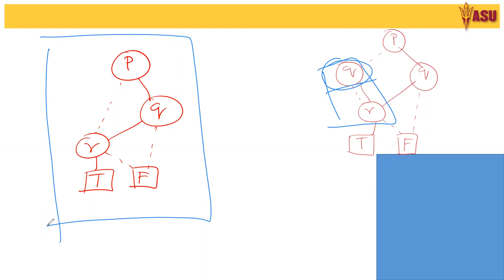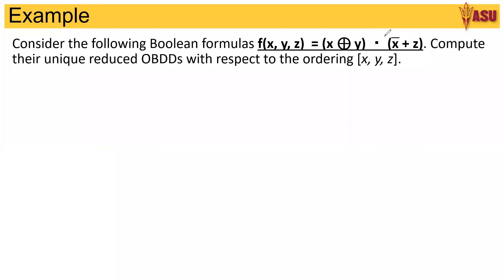Let's see another example starting with a formula. How would I like to go about doing it? So here is a boolean formula. x xor y, not x or y and the two are ANDed. And using the ordering x, y, z, we need to compute the reduced binary decision diagram. The way I would like to go about doing this is by first writing out the truth table.